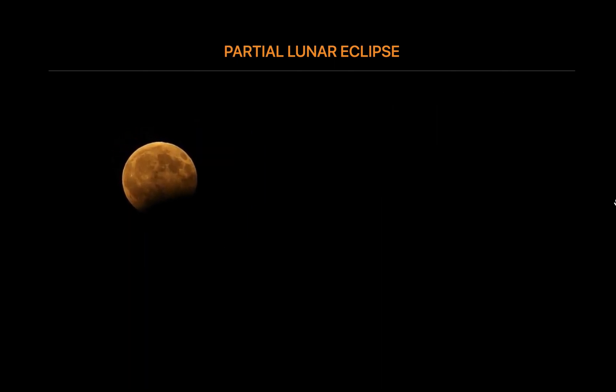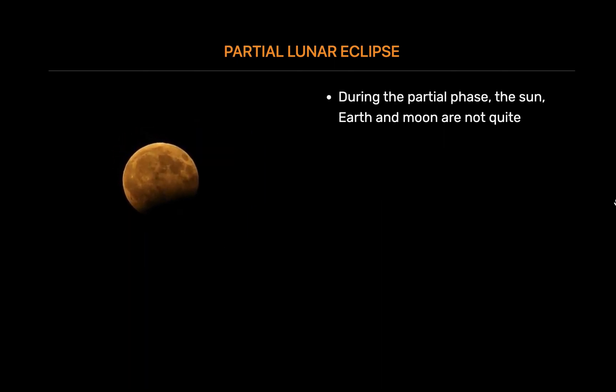Partial lunar eclipse. Some eclipses are only partial. But even a total lunar eclipse goes through a partial phase on either side of totality. During the partial phase, the Sun, Earth and Moon are not quite perfectly aligned, and Earth's shadow appears to take a bite out of the Moon.